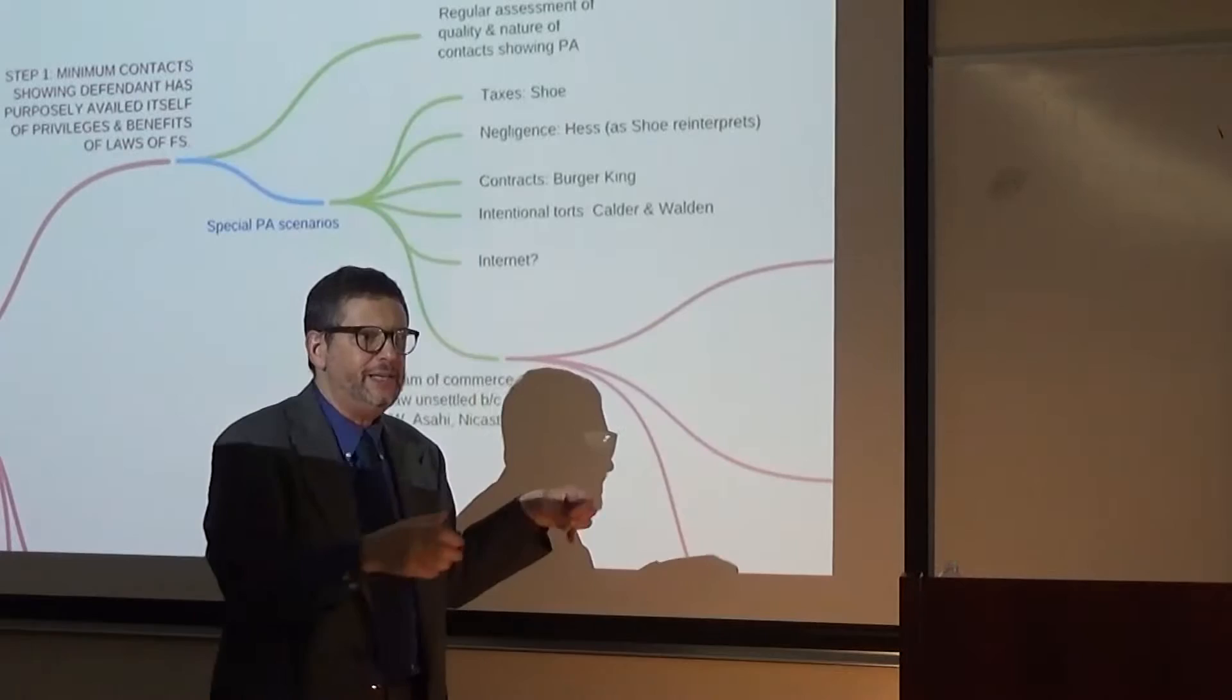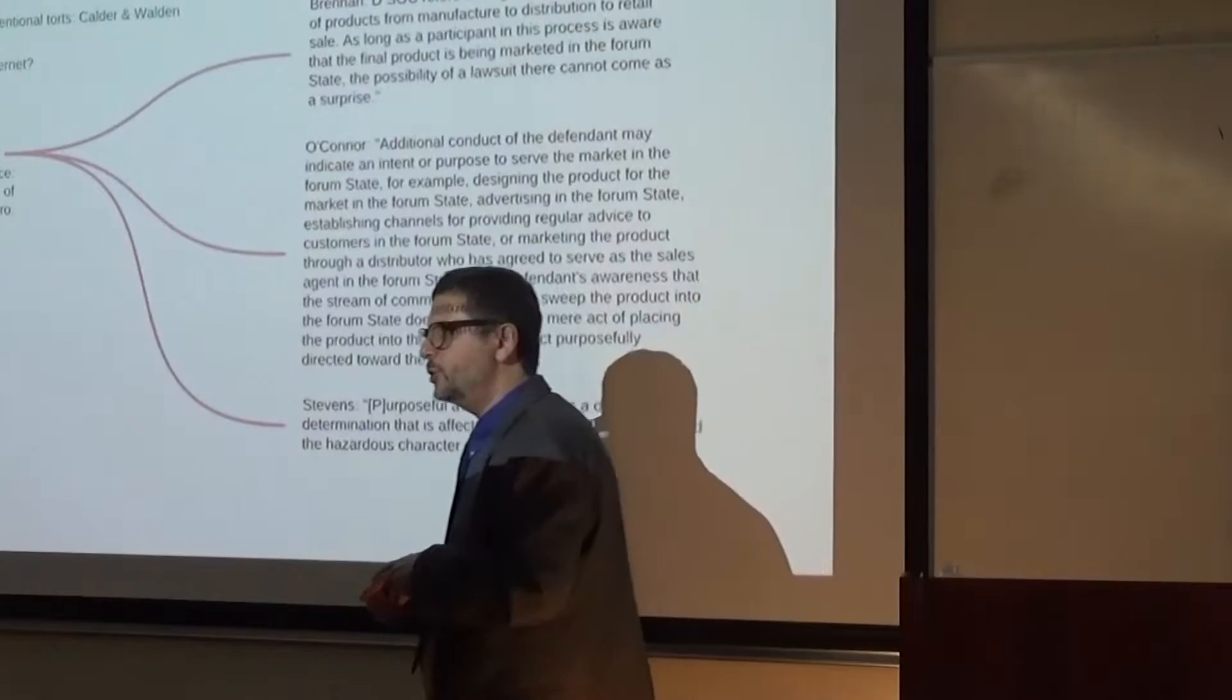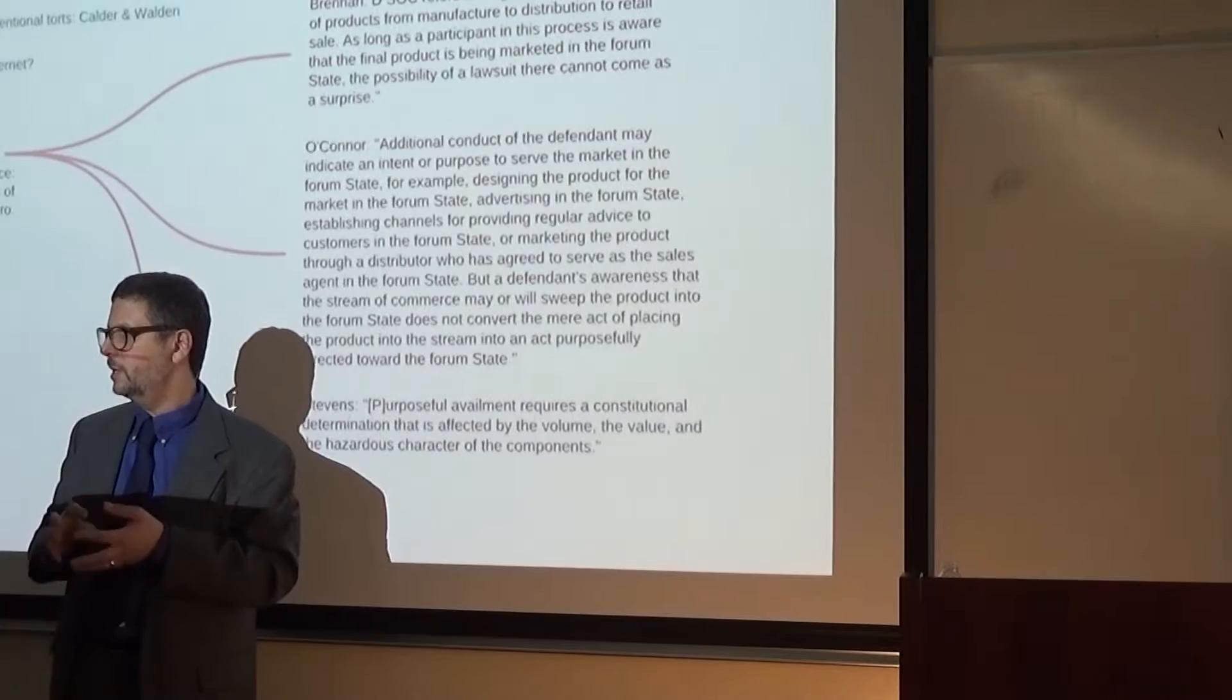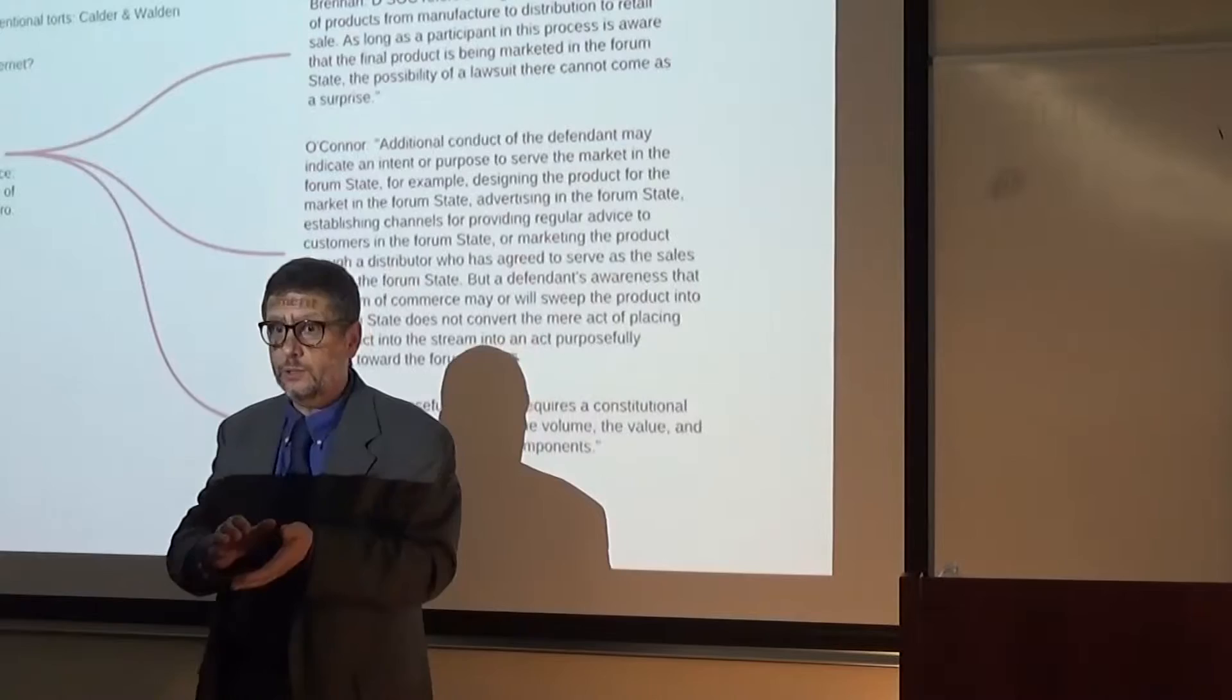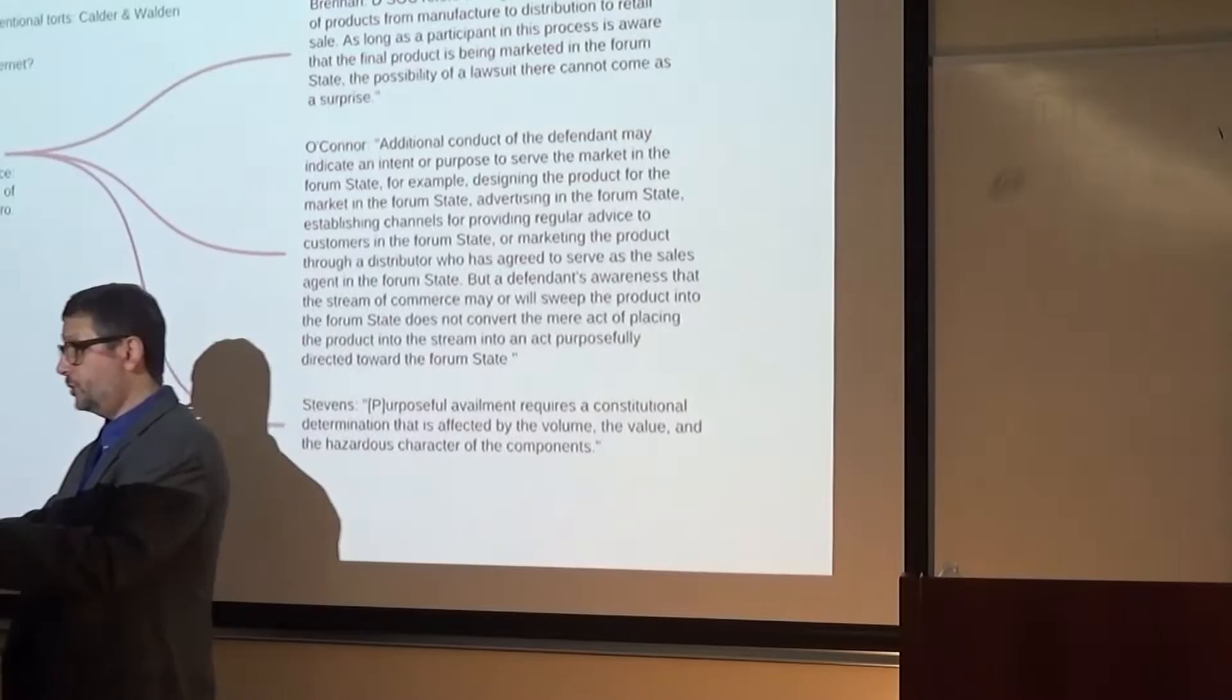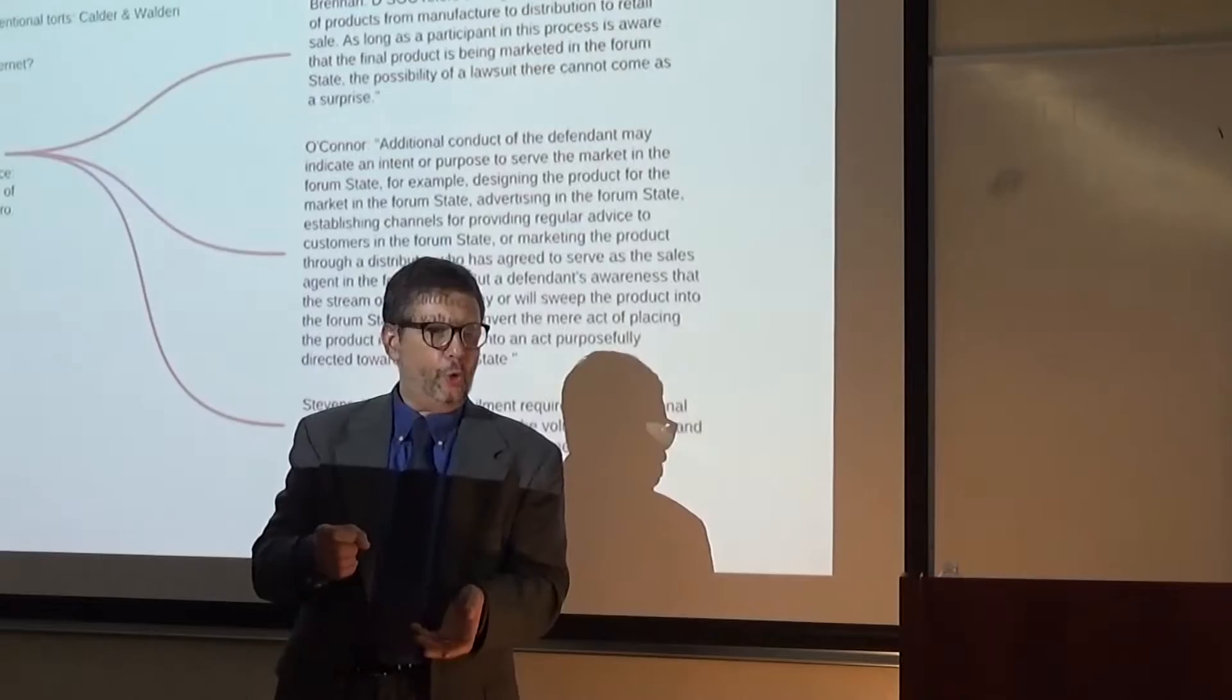All this stuff up here are just different ways of satisfying purposeful availment. A contract. Negligence. You drive to the state and run into a car there. An intentional tort like in Calder and Walden. You also have stream of commerce. And that's potentially testable. The problem here is the court is split, but I can imagine the test makers easily coming up with a factual scenario that requires you to know the difference between the Brennan, the O'Connor, and the Stevens approaches to stream of commerce. The Supreme Court has never decided when a stream of commerce test is satisfied or not. In other words, what kind of conduct does not show purposeful availment by stream of commerce. The stream of commerce is when goods, either a component, a part of a product, or the finished product itself, is sent from the place of manufacture, through a chain of distribution, to the final place where it's sold and then causes injury. Asahi itself. A valve made in Asia. It shipped elsewhere in Asia where it goes into a tube, eventually goes into a tire. Eventually goes into a motorcycle tire, which eventually ends up in a motorcycle in California where the tire or the tube or the valve go bad and cause horrifying accident for Gary Zerker and his wife.